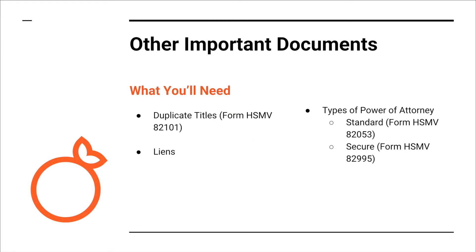For other important documents, you will need duplicate title form A2101. We're going to go over liens and types of power of attorneys.